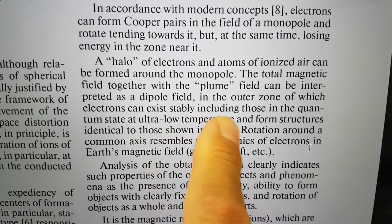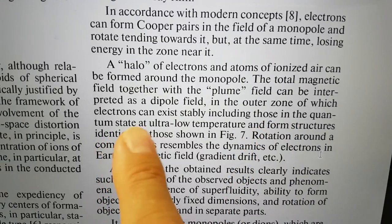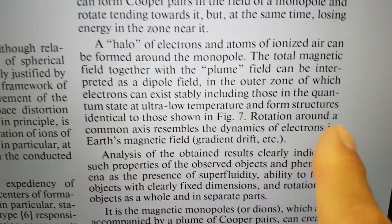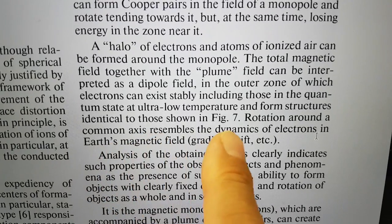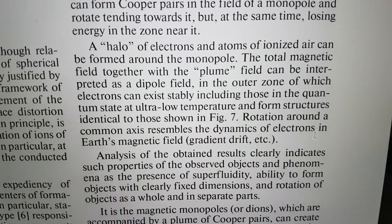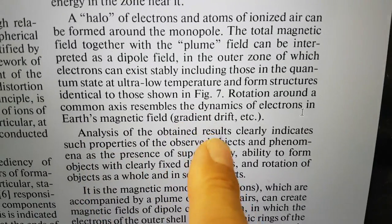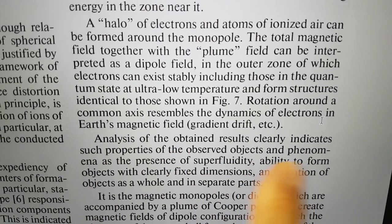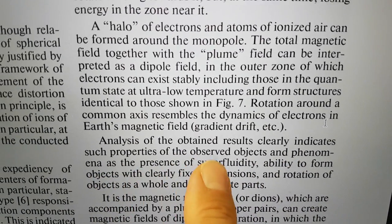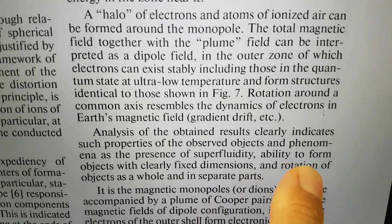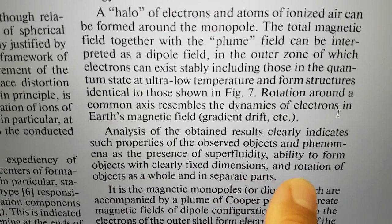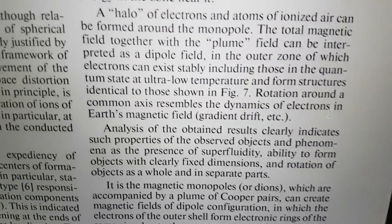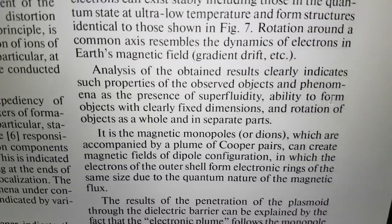Electrons can exist stably, including those in the quantum state at ultra-low temperatures and form structures identical to those shown in Figure 7. Rotation around the common axis resembles the dynamics of electrons in Earth's magnetic field. Analysis of the obtained results clearly indicates such properties of the observed objects and phenomena as the presence of superfluidity, ability to form objects with clearly fixed dimensions, and rotation of objects as a whole in separate parts, in the magnetic monopoles.